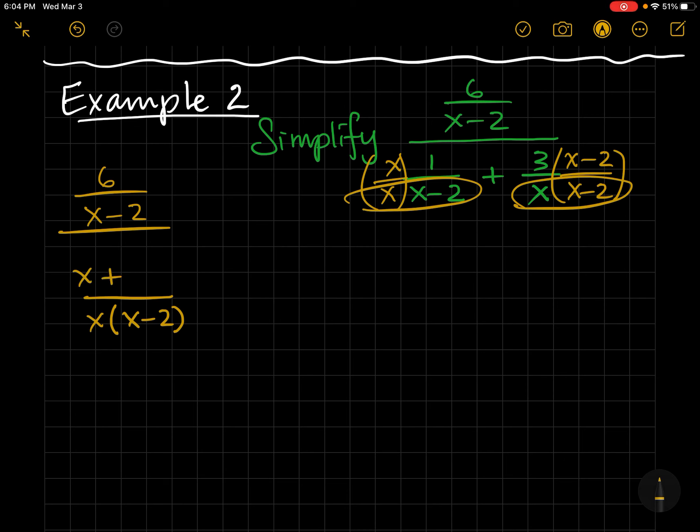Notice we have our common denominator. So now I have x plus, this is 3x, 3 times x minus 2. I'm going to go ahead and distribute that, and I get 3x minus 6.